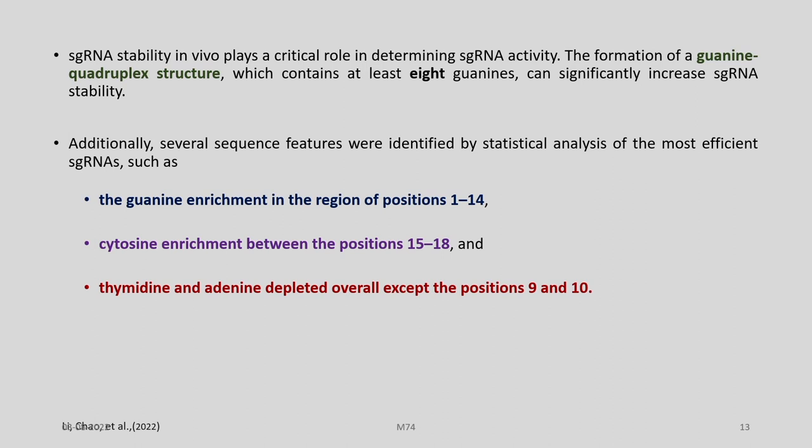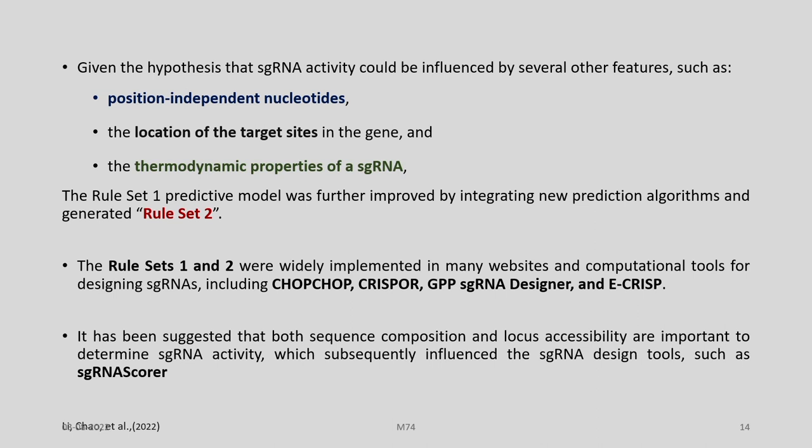sgRNA stability in vivo plays a critical role in determining sgRNA activity. The formation of a guanine quadruplex structure, which contains at least 8 guanines, can significantly increase sgRNA stability. Several sequence features were identified by statistical analysis of the most efficient sgRNAs: guanine enrichment in positions 1 to 14, cytosine enrichment between positions 15 to 18, and thymidine and adenine depleted overall except at positions 9 and 10. sgRNA activity could also be influenced by position-independent nucleotides, the location of target sites in the gene, and the thermodynamic properties of the sgRNA.